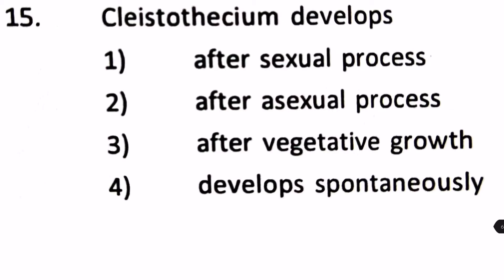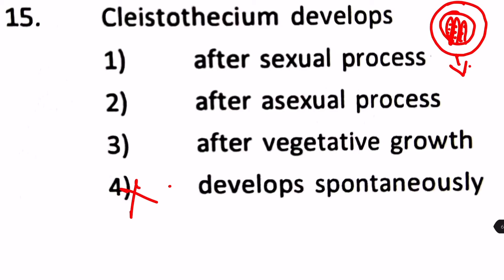Cleistothecium develops: after a sexual process, after an asexual process, after vegetative growth, or spontaneously? It doesn't develop spontaneously. It's a globose fruit body completely protected from outside. For Ascomycetes, the Ascus spores are formed inside. This fruit body forms after fertilization takes place — that is, after a sexual process. So the answer is number 1.